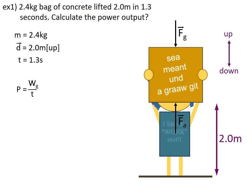WG is equal to FG times displacement vertically, so I will substitute that in for WG. FG is equal to mass times gravity, so I will sub that in for FG.